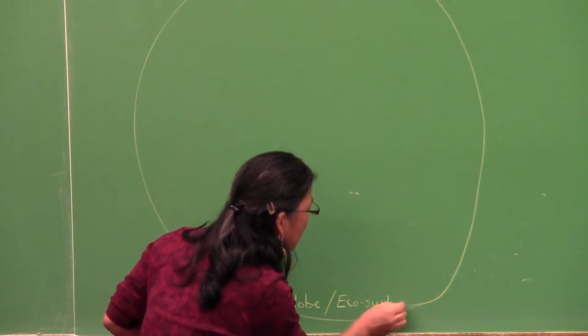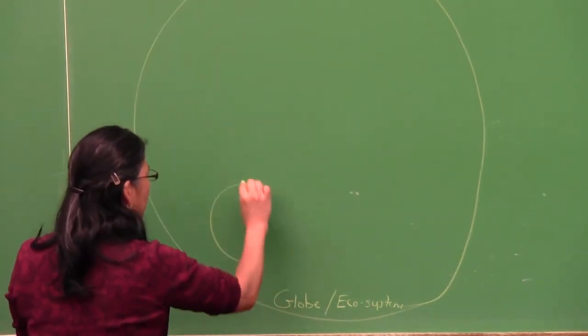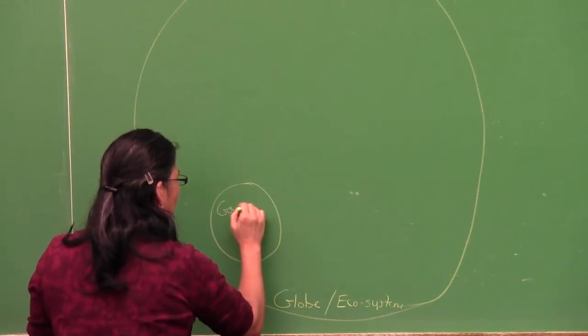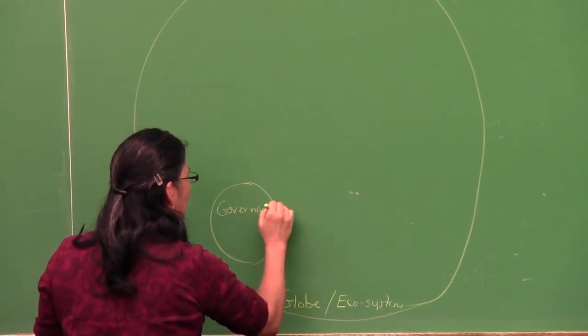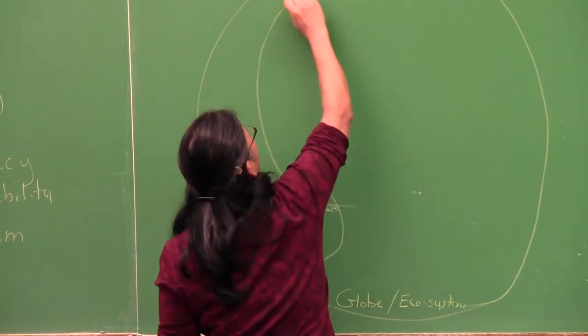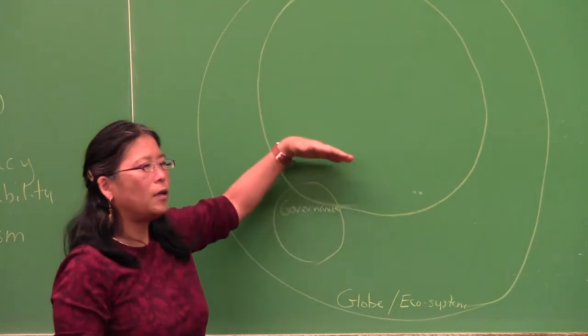And then we have the government, or governance, which not completely, but definitely frames what kind of an economic system you have. So then we have the Solidarity Economy with an overlap with governance.